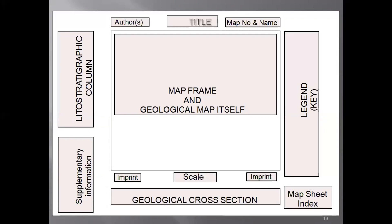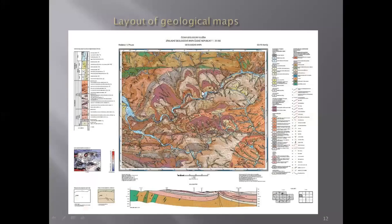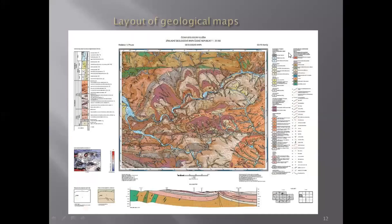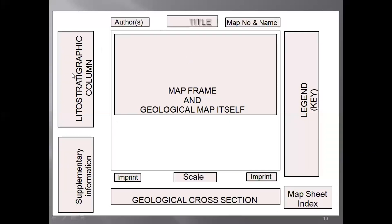It is very important for you as a geologist, and as a professional geologist in the future, to know the various parts of a geological map. The central part is mostly the map itself, as you can see here. On the right side you have the key where all the symbols are described, and on the left hand side you can see the lithostratigraphy column.